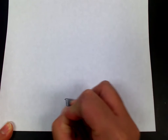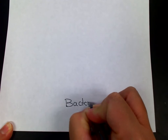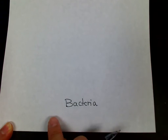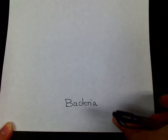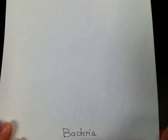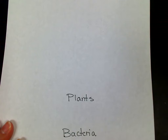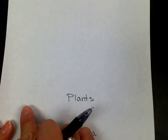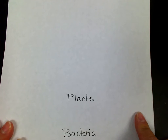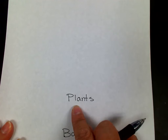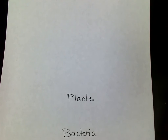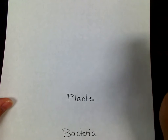At the very bottom you're going to put down the word 'bacteria,' because this is going to be your level of decomposers. Then above that you're going to put down 'plants' — that is your first level of your energy pyramid, because this is the level that has the greatest amount of energy.